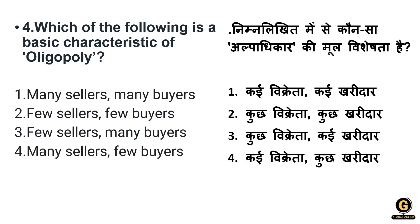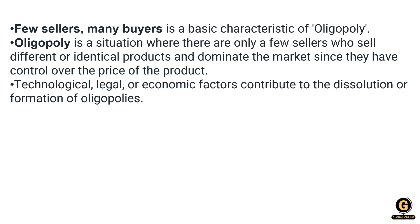Question 4: Which of the following is a basic characteristic of oligopoly? Options are: many sellers many buyers, few sellers few buyers, few sellers many buyers, many sellers few buyers. In oligopoly there are many buyers but very few sellers, so the correct answer is option 3: few sellers and many buyers. Oligopoly is a situation where only a few sellers dominate the market and can control the price of the product. Technological, legal, and economic factors contribute to the formation of oligopoly.